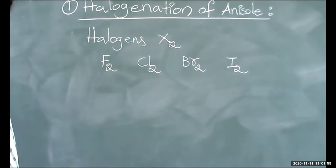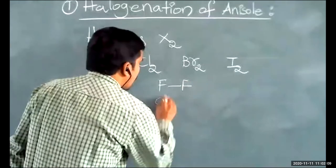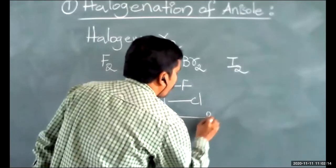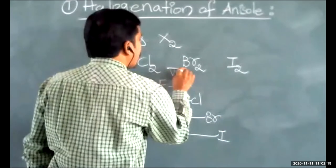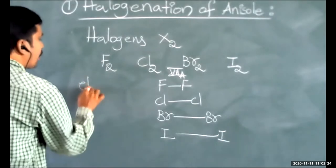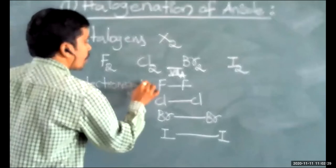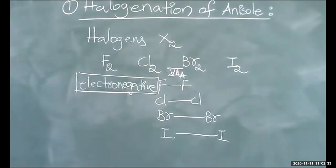F2 (fluorine) is more reactive. F2 is fluorine–fluorine, Cl2 is chlorine–chlorine, Br2 is bromine–bromine, and I2 is iodine–iodine. All belong to 7th A group elements, which are highly electronegative in nature. In the periodic table, 7th A group elements have a high tendency to gain electrons.